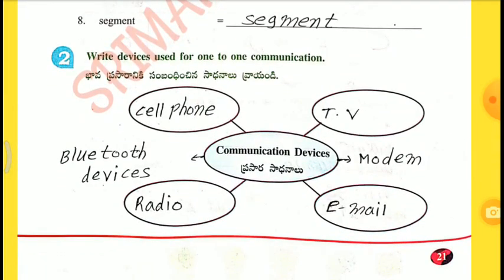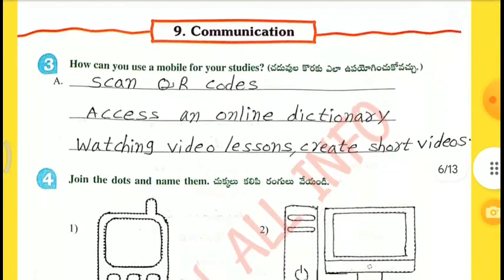Write devices used for one-to-one communication: cell phone, TV, modem, email, radio, Bluetooth devices. 3rd one — How can you use a mobile phone for your studies? Scan QR codes, access an online dictionary, watching video lessons, create short videos.